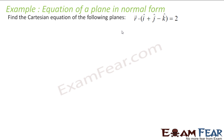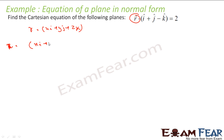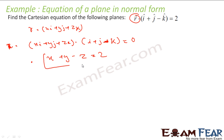We will take one more example. We have to find the Cartesian equation for R dot (i plus j minus k) equals 2. To find the Cartesian form, the only thing I will do is make R equal to xi plus yj plus zk. You put this value in the equation and get the answer. So the equation becomes: (xi plus yj plus zk) dot (i plus j minus k) equals 2. This gives x into 1 is x, y into 1 is y, z into minus 1 is minus z. And that is my answer.